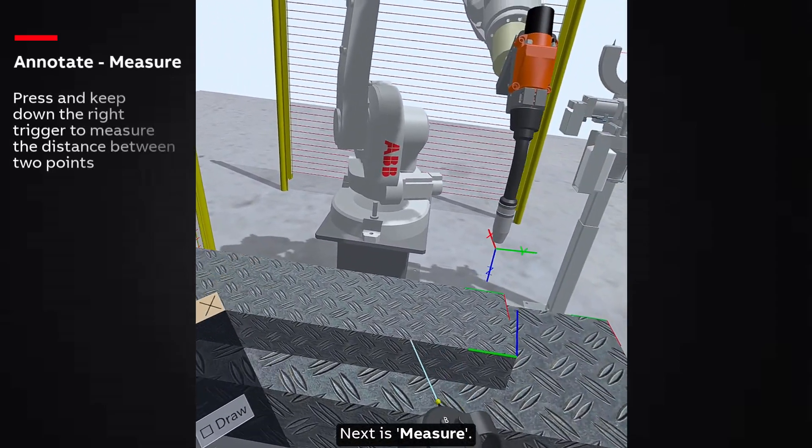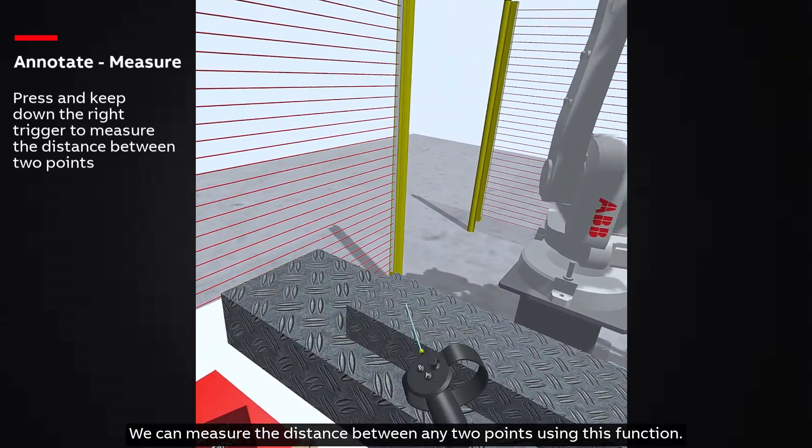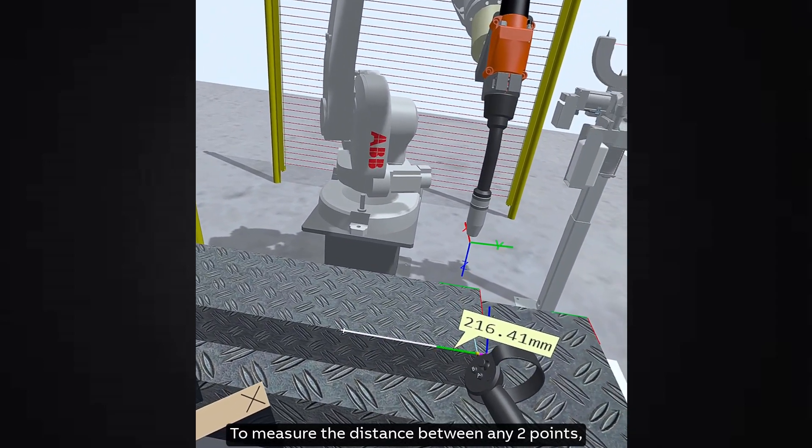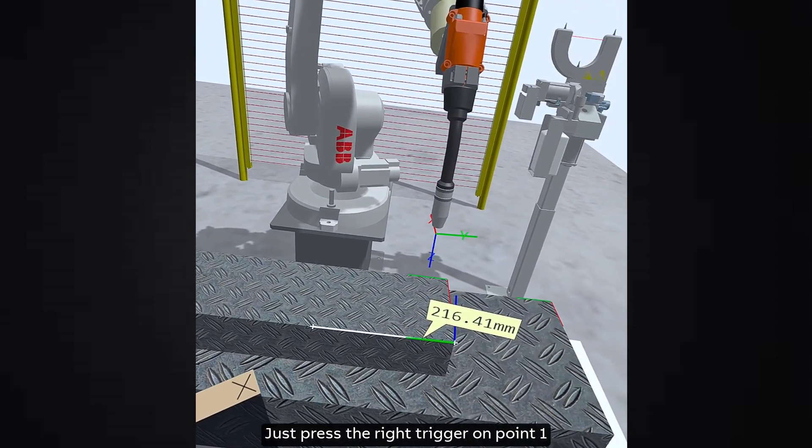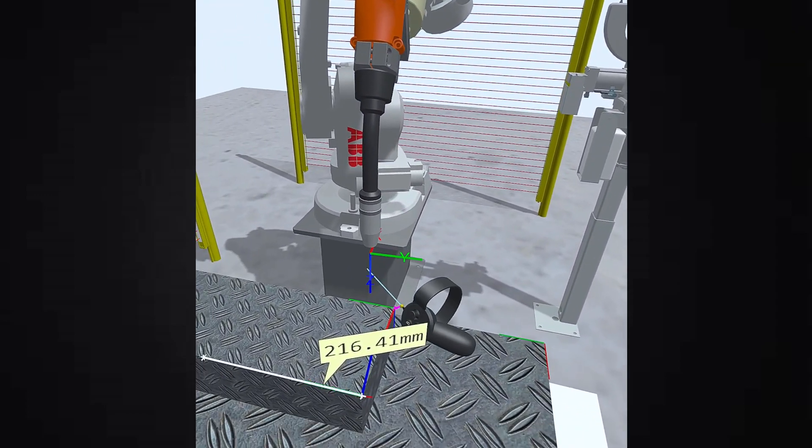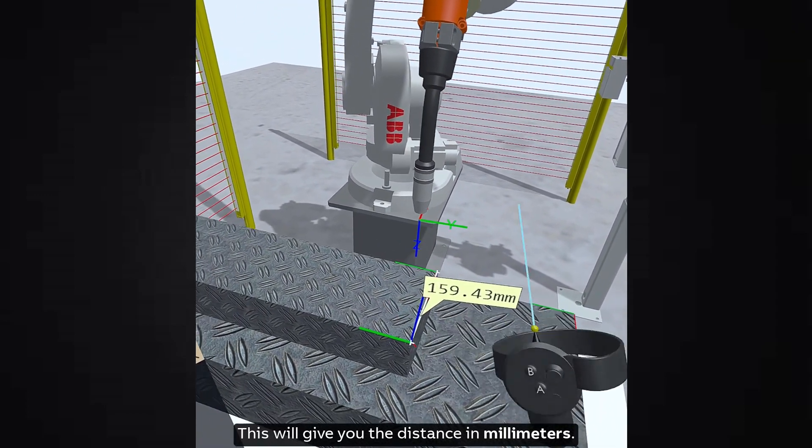Next is measure. We can measure the distance between any two points using this function. To measure the distance between any two points, just press the right trigger on point one and keep it pressed until you reach point two. This will give you the distance in millimeters.